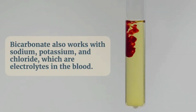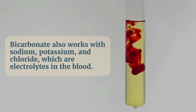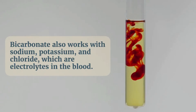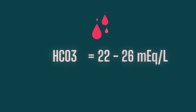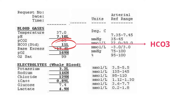Bicarbonate also works with sodium, potassium, and chloride, which are electrolytes in the blood. The normal range of HCO3 in the blood is between 22 to 26. In this video, we will look at the significance of bicarbonate in ABG, along with the interpretation of various metabolic disorders.